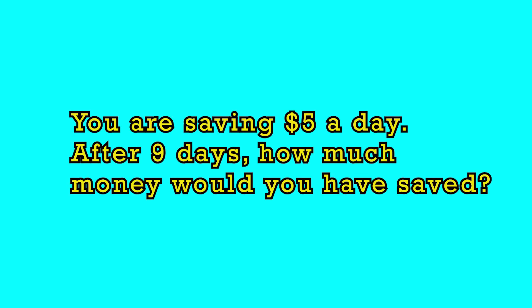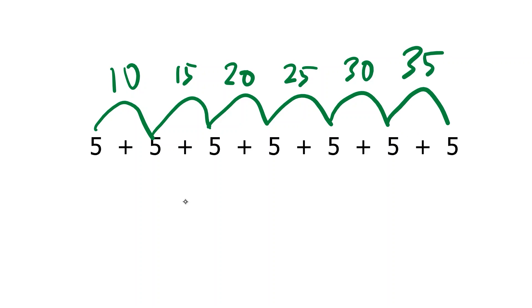Now I'm going to give you a challenging problem to do on your own. Let's say you are still saving $5 a day, but this time you save it for nine days. How can you use multiplication to figure out how much money you saved without having to count $1 at a time? I'm going to give you three seconds to solve this problem, but don't worry — you can pause this video and take as long as you want. Remember, it's not about being fast, it's about being right. So take your time if you need to.